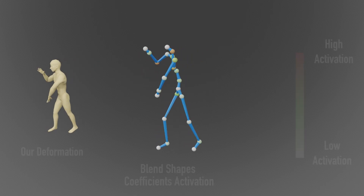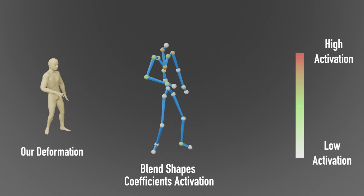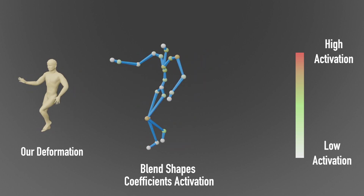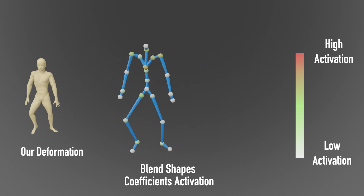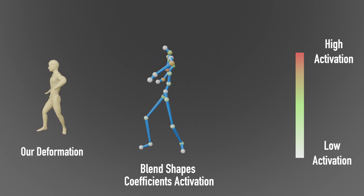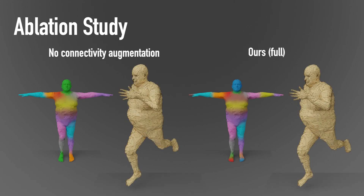Here we visualize the activation of the blend shape coefficients as a function of pose. Despite not being supervised directly, the network infers an accurate relationship between the two. Here, the network was trained with no connectivity augmentation and no garment augmentation. It can be seen that the network struggles to generalize the skinning weights to unseen characters.